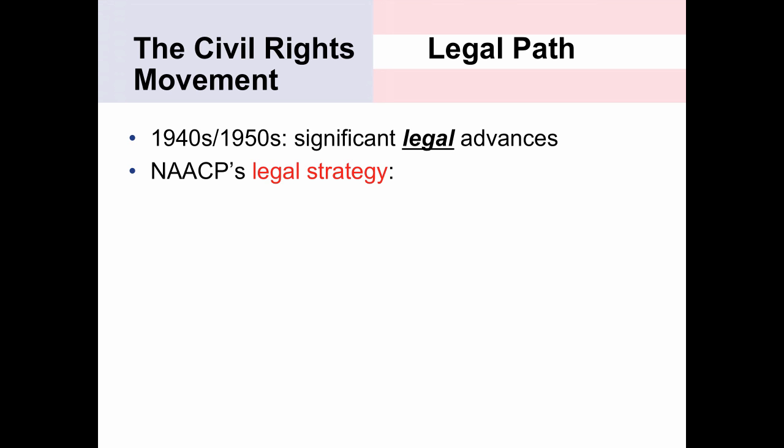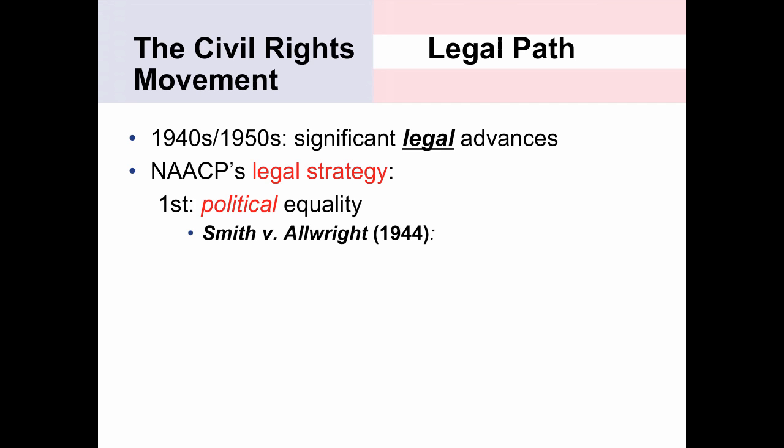The legal strategy had two different steps. The first was to achieve political equality. Remember, Plessy v. Ferguson had said political equality was required under the law — it was social equality that states did not have to guarantee. For example, in 1944 the Supreme Court ruled in Smith v. Allwright that the white primary was discriminatory, infringing upon racial minorities' opportunity to vote, and ruled it unconstitutional. Over the course of several years, the other mechanisms behind Jim Crow laws were also ruled unconstitutional. Only after making the point about political equality did the NAACP go after social equality.